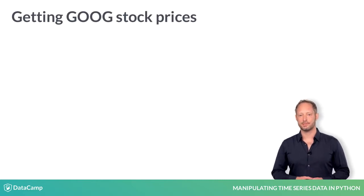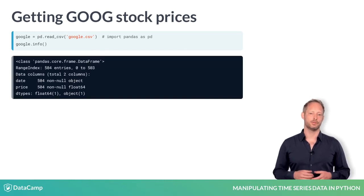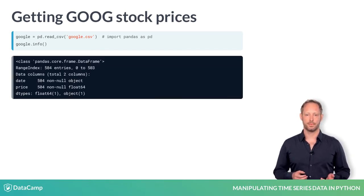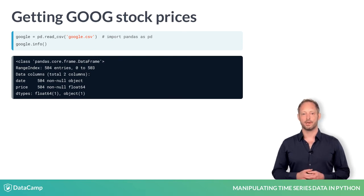Our first dataset is a time series with two years of daily Google stock prices. You will often have to deal with dates that are of type object or string.